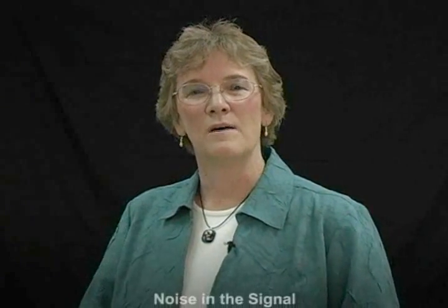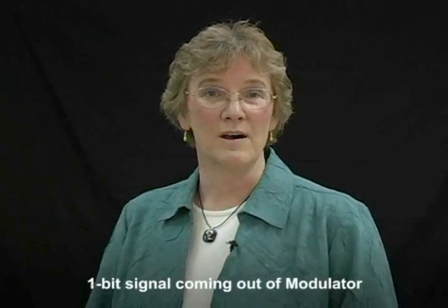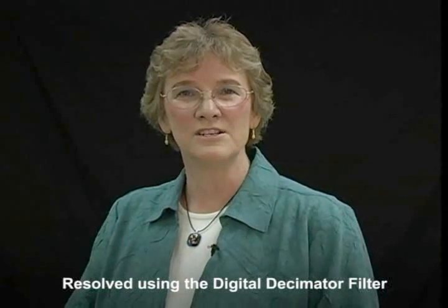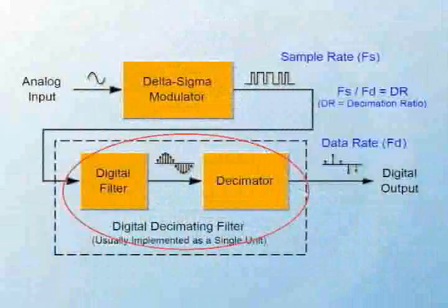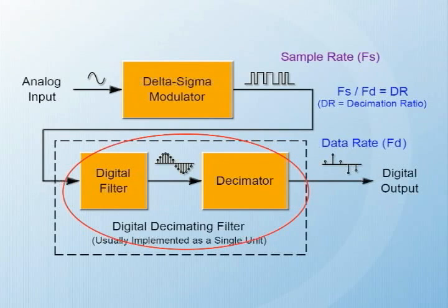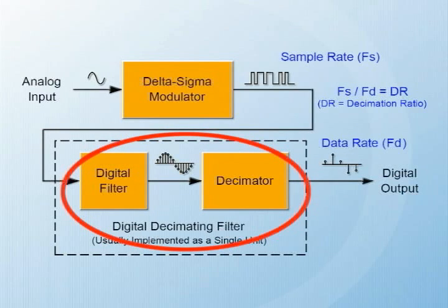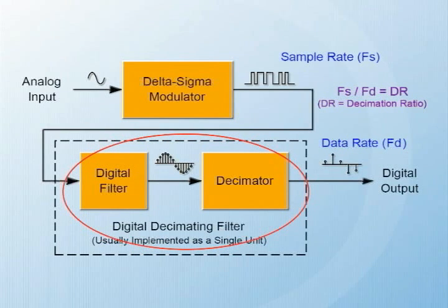At this point I have two problems. One problem is that I have a lot of noise still in the signal. The second problem is that I have a 1-bit signal coming out of the modulator, but I'm actually after a multi-bit word coming out of my converter. I can resolve both of these in the digital domain with my digital decimator filter. Going back to the block diagram: the analog signal went into the modulator, oversampled at a high sampling rate, producing a 1-bit code that goes into the digital decimator filter. The digital decimator filter takes in that 1-bit code, creates a high-bit word, slows down the output word, and gives me the data rate.